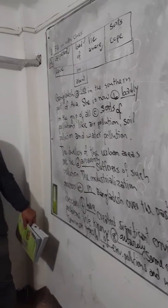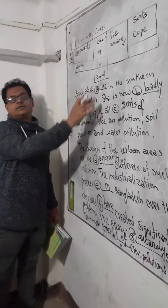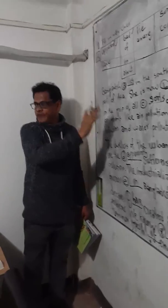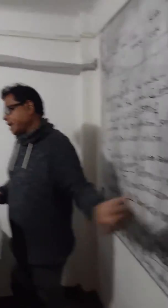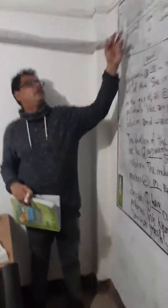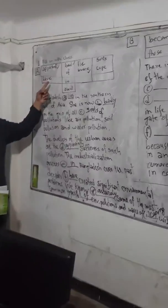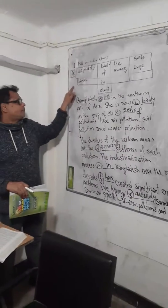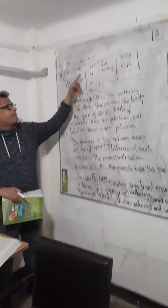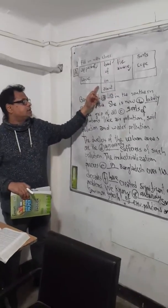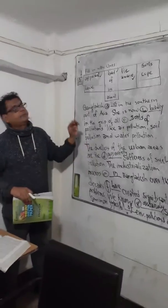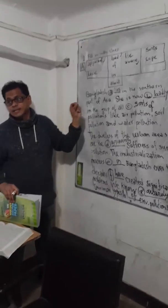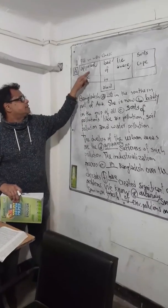For example, number A is done for you. You will look at how I have filled it and then fill in the gaps for B. In question number one, we have filling with clues. Here we have ten words: apparent, have, bad, of, in, about, lie, aware, source, and cope.